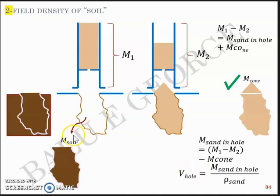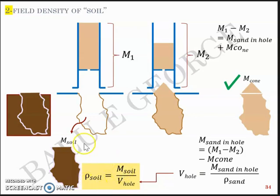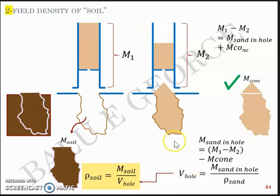From the volume of the hole and the mass of the soil dug out, you can find the field density of the soil: field density equals mass of soil divided by volume of hole. The complexity of this method arises solely because the hole is of irregular shape. To find the volume of that irregular shape, you use sand as a standard material — using its known density to determine the hole volume. These two methods, the core cutter method and the sand replacement method, are the two approaches to determine field density of soil.